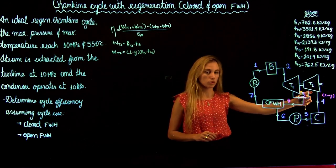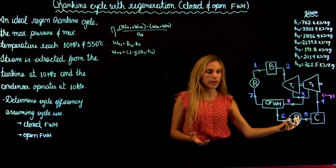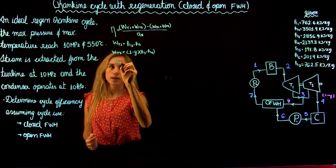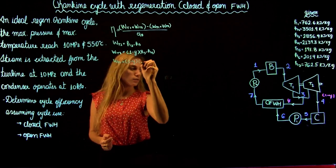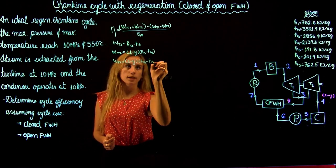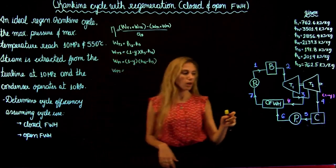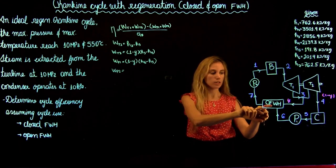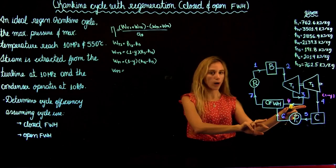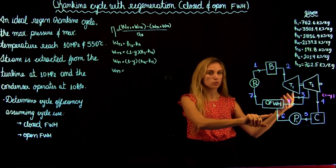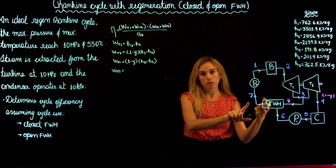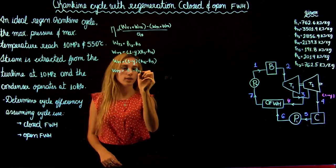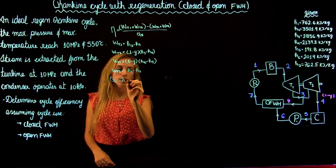After the second turbine the fluid is not split again, so in the first pump we still have a fluid fraction of (1 minus Y), giving (1 minus Y) times (H6 minus H5). For the second pump, 100% of the fluid flows through, because the open feed water heater has two inputs — one with fraction Y and one with fraction (1 minus Y) — so the output is at 100%. Therefore the work of the second pump is H1 minus H7, and the heat input in the boiler is H2 minus H1.